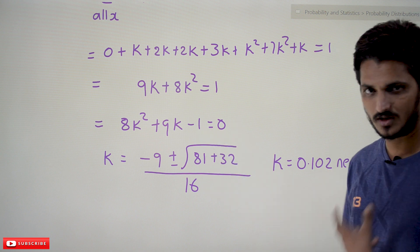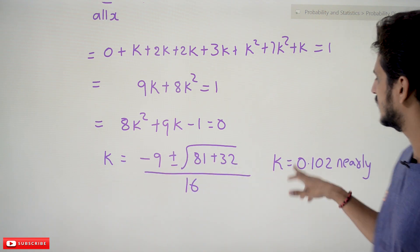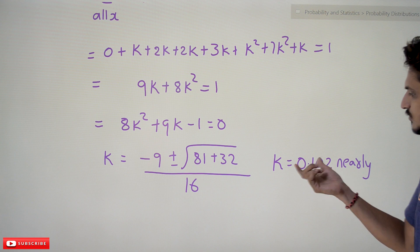If you solve this equation, we are not going to explain how to solve these equations and all the things. K is equal to, we will get K ≈ 0.102. So this is what the K value is.